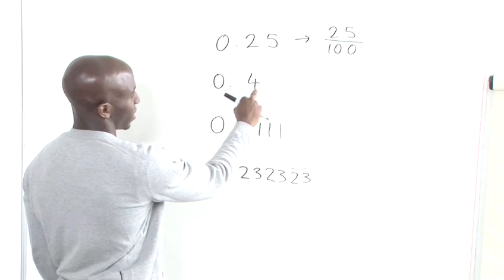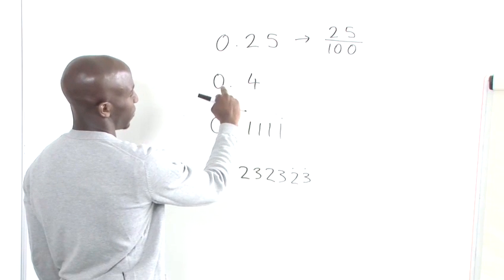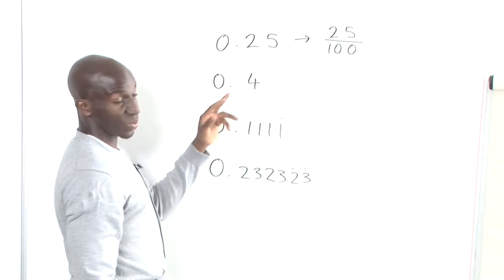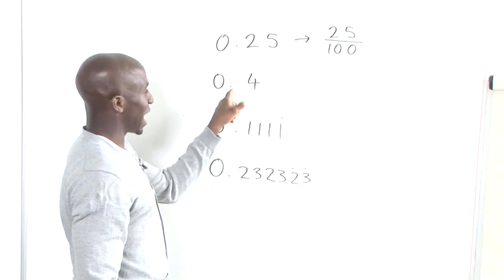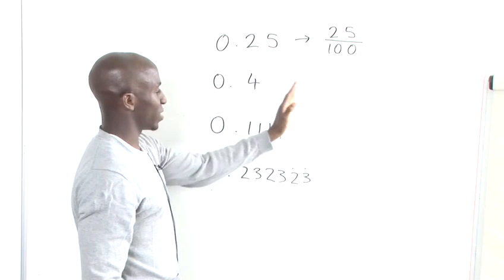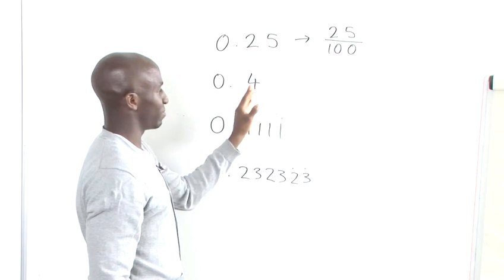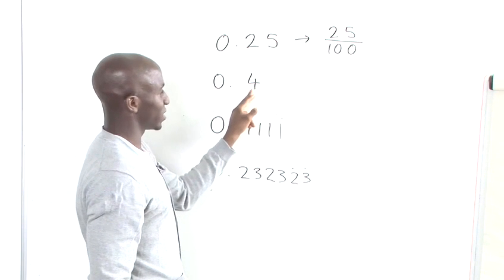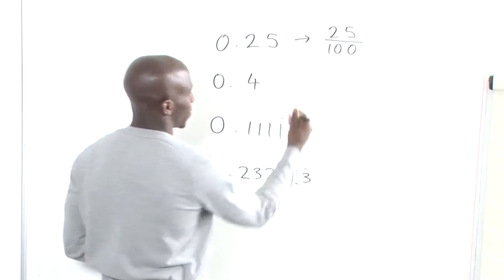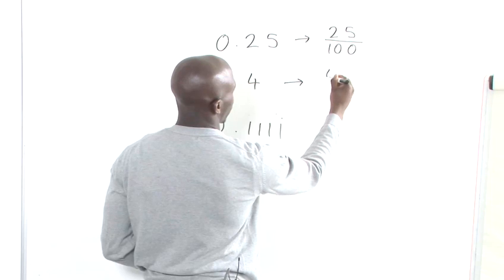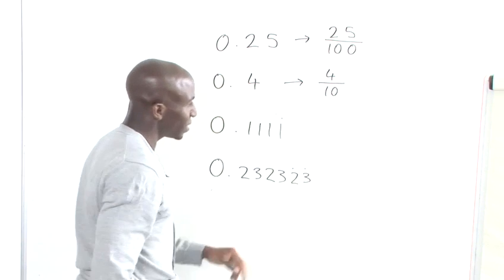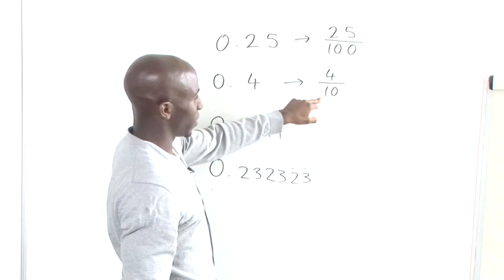If you look at 0.4, the first thing we need to do is say how many times does the decimal point need to jump to the right to pass the entire number. We've only got the digit 4, so it's just one jump. So we would say 4 divided by 10, and that gives us the fraction we're looking for.